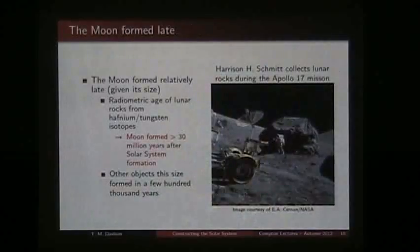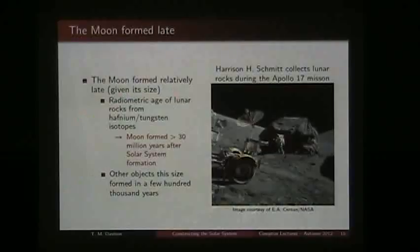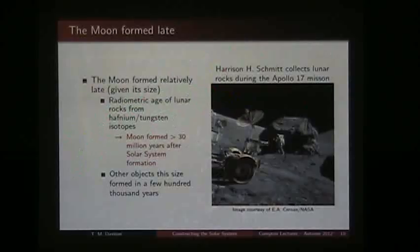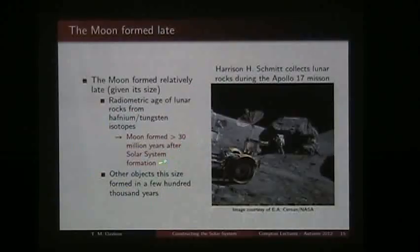Based on radiometric age data from lunar rocks — for example, from the hafnium-tungsten chronometer, looking at isotopes of hafnium and tungsten and their decay products — we come to the conclusion that the moon formed at least 30 million years after the solar system formed, possibly 50 or 60 million years after. This is strange because planetesimals grew to hundreds of kilometers in size in just a few hundred thousand years. So how did the moon form so large, so much later than all the other planetesimals?